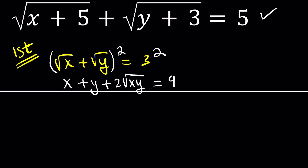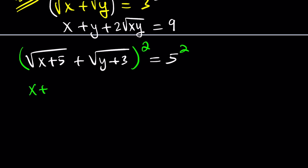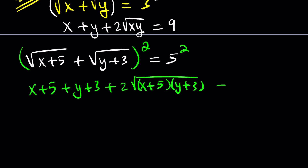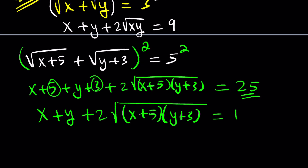Now we're going to do the same thing with the second equation, which equals 5. When we square both sides we get x plus 5, y plus 3, and then the 2ab term which is their product under a single radical, equal to 25. We can add 5 and 3 to get 8 and subtract it from 25, giving us x plus y plus 2 times the square root of (x+5)(y+3) equals 17.